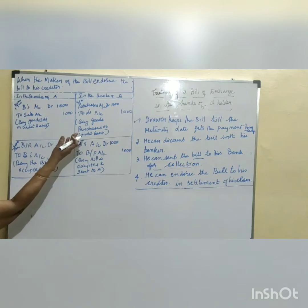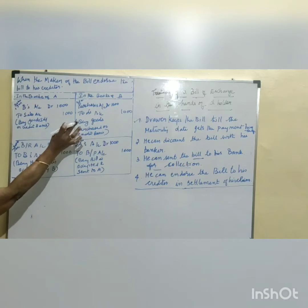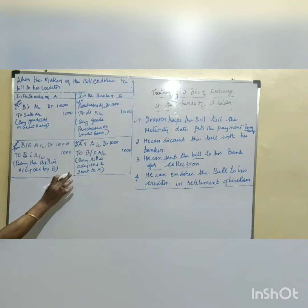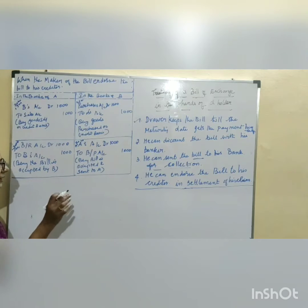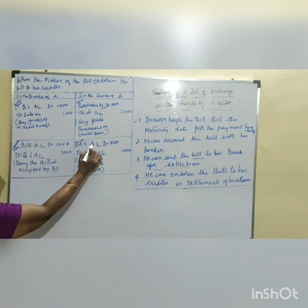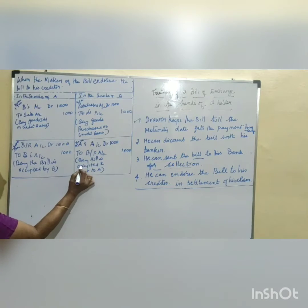In the books of B, purchase account is debited 1000 rupees to A's account, being goods purchased on credit basis. When the bill is signed, accepted, and sent back to A, A's account is debited 1000 rupees to bills payable account, being the bill is accepted and sent to A.